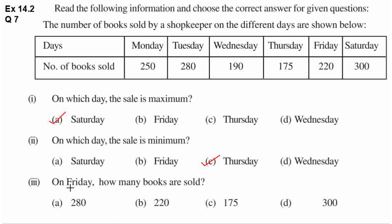Third question hai: on Friday how many books are sold? Friday yahaan per mentioned hai. Friday ko kitni books sell ki gahi hai? 220. Yahaan per 220 mentioned hai B option mein, so B is the correct answer.